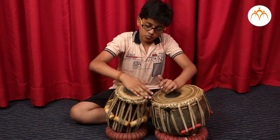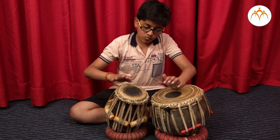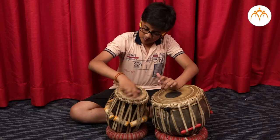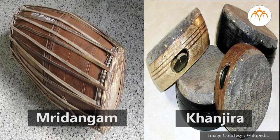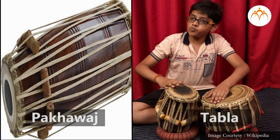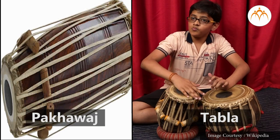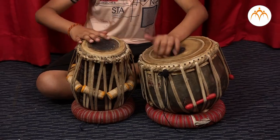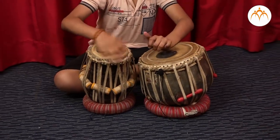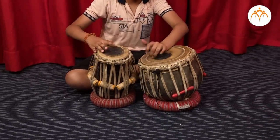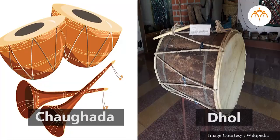Percussion instruments are played with palms and fingers like Mridangam and Khanjira, Pakhvaj and Tabla. Some instruments in this category are struck with hammers like Chavgada and Dhol.